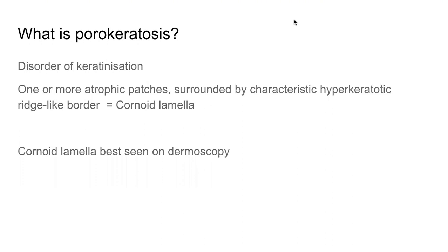What is this condition? It's a disorder of keratinization of the skin epidermis. It presents often with one or more atrophic patches, surrounded by a characteristic hyperkeratotic ridge-like border known as the cornoid lamella. The cornoid lamella is best appreciated under magnification with dermoscopy, however it is also quite easy to feel on physical examination.